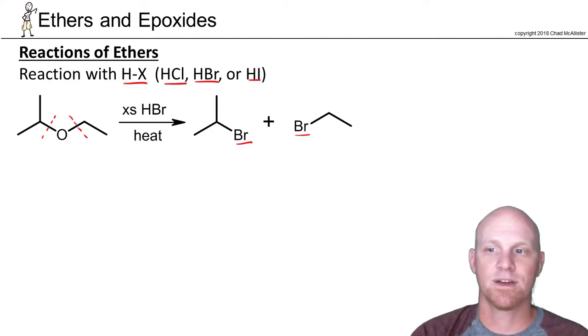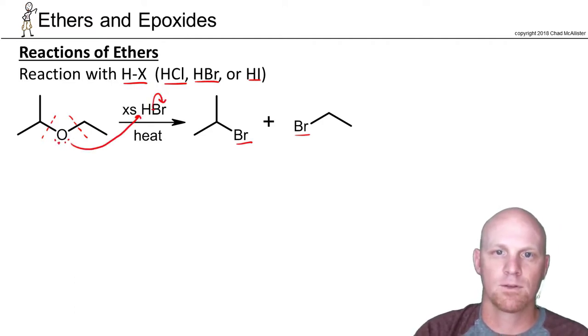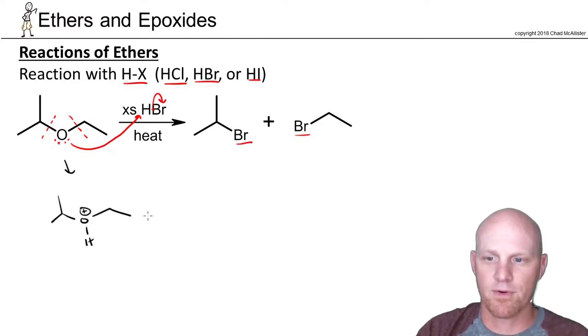If we take a look at the mechanism here, the mechanism is just a little bit funky. But in this case, the first thing we're going to do is protonate. So we'll also form a bromide ion here. So it turns out that mechanistically here,